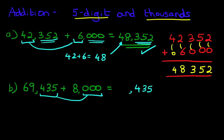Let's look at the thousands. We've got 69,000 and we have 8,000. We're going to add them together: 69 plus 8. You should know this. 69 plus 8 is 77. Let's write this down: 77. So the answer to the question is 77,435.